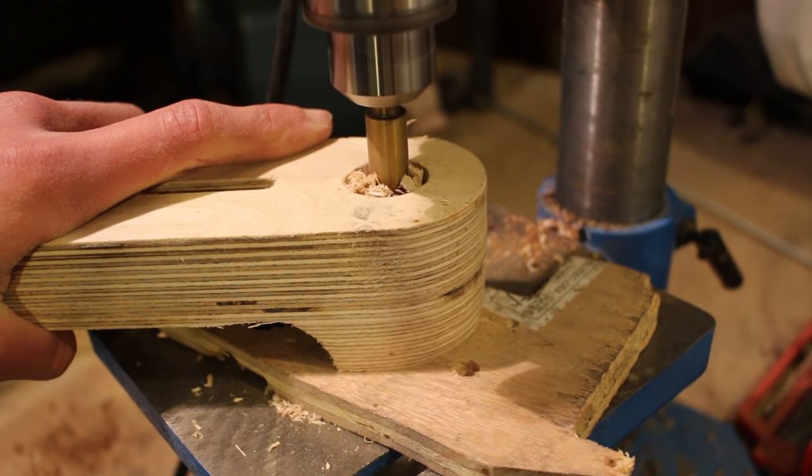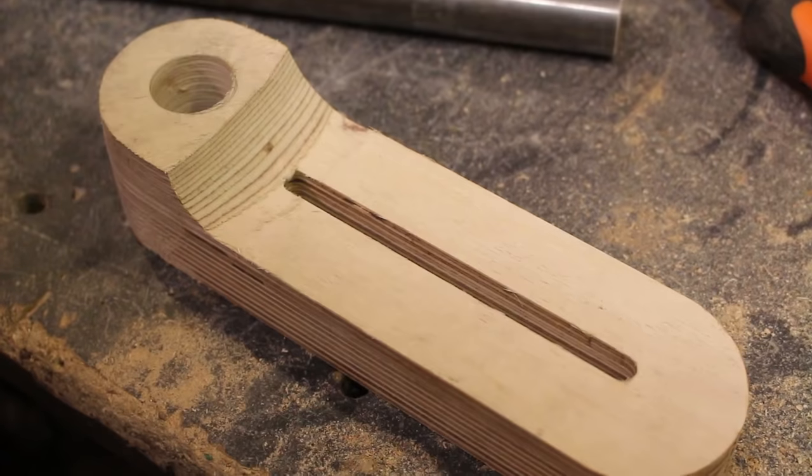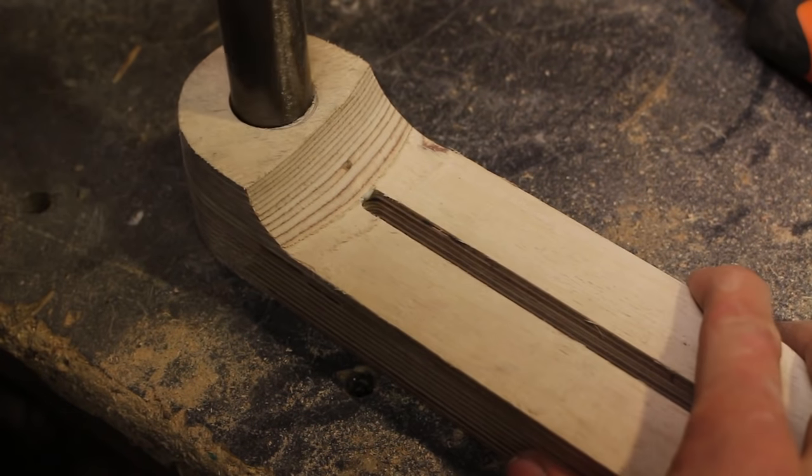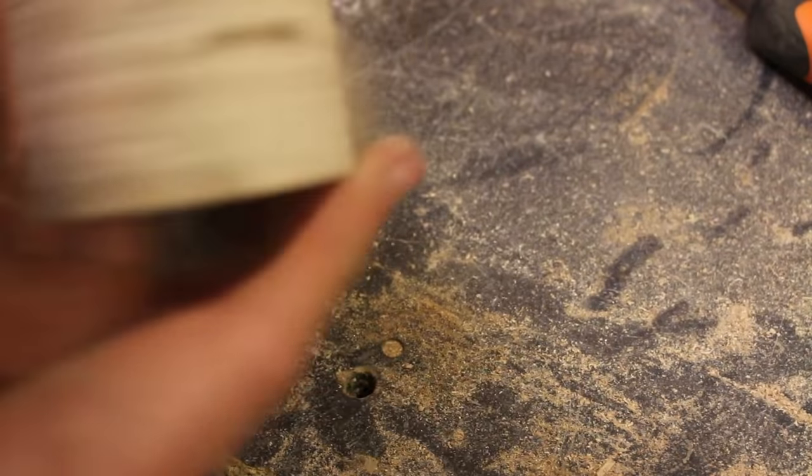I then used a forstner bit to drill out the center hole. I make sure that the hole is the right diameter to fit this 24mm piece of solid steel rod.